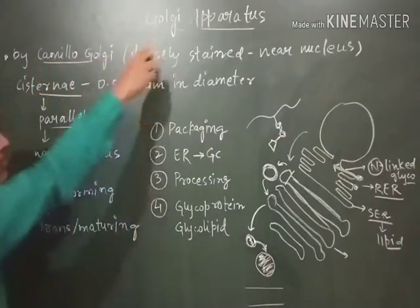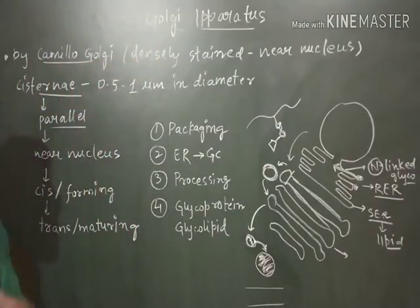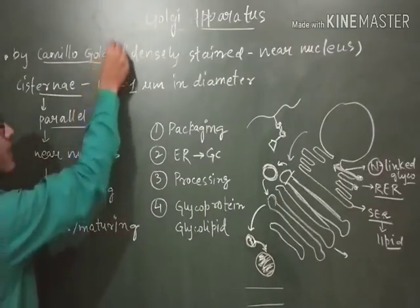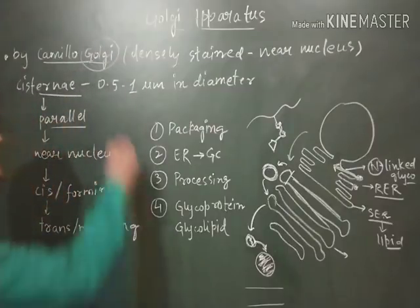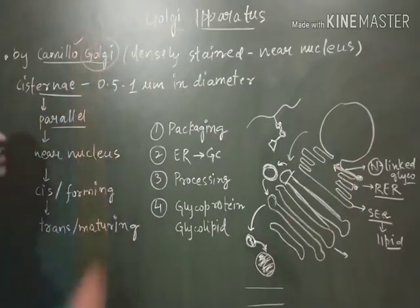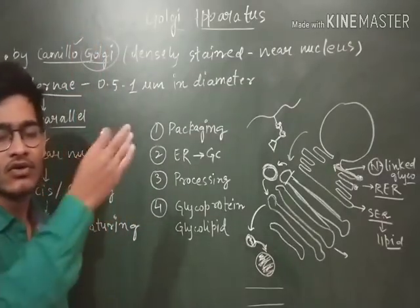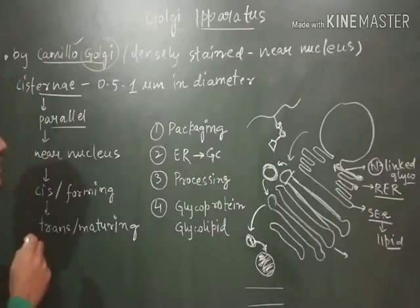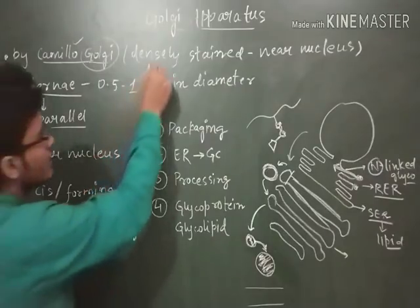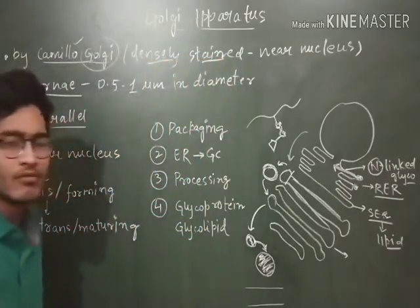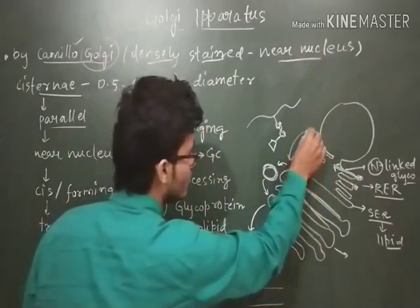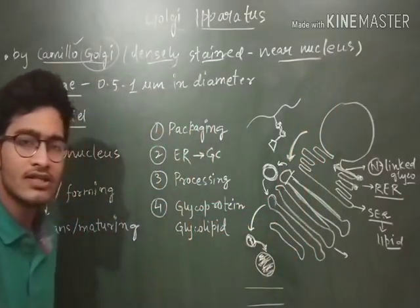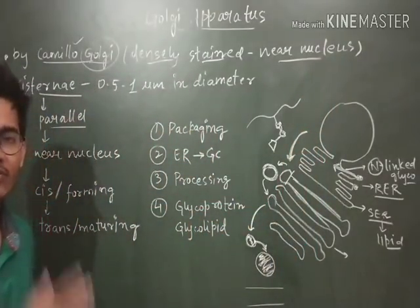The name Golgi apparatus, or Golgi body, is named after the scientist who discovered it for the very first time — that is Camillo Golgi. These are basically the densely stained bodies which are present near the nucleus. That is why they are present near the nucleus or near the endoplasmic reticulum, because their functions are a little bit coordinated.